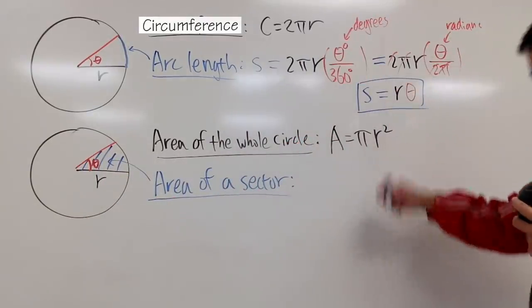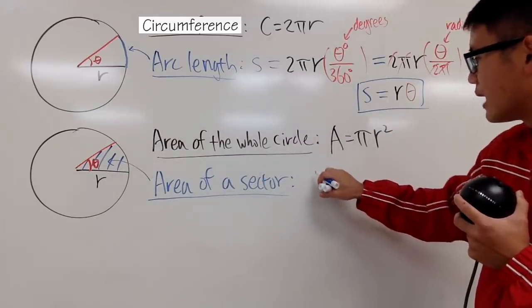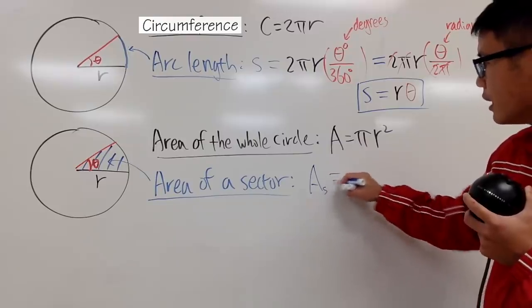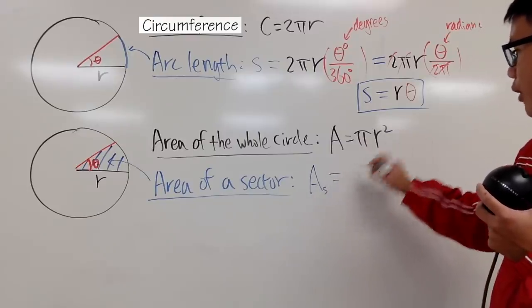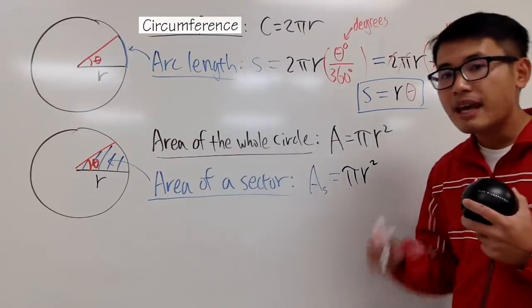So, it's pretty much the same thing. I want to find out the area right here for that sector. I will put down A with a little s for the area of the sector. To do so, I will still have to know the whole thing. So, I will have to put down πr². No problem on that.